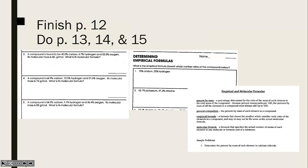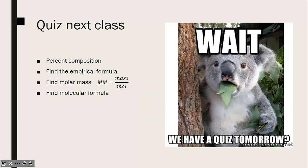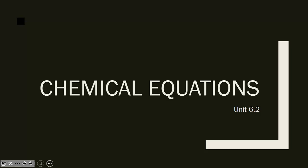We are now done with unit 6.1. Please complete pages 12, 13, 14, and 15 in your packet. Next class, we will have a quiz where you find percent composition, use the poem to find an empirical formula, then determine molar mass by dividing sample mass by moles. From that molar mass, determine the molecular formula. Good luck on your quiz, and I'll see you in unit 6.2, Chemical Equations.